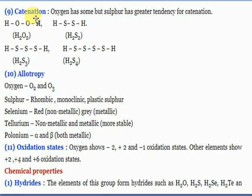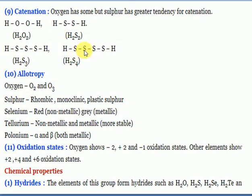Regarding catenation: oxygen has less catenation capacity, but sulfur has a higher tendency of forming catenation. Sulfur has atomicity of 8 (S₈), while oxygen has atomicity of 2 or 3. So when comparing melting and boiling points of oxygen and sulfur, sulfur has the higher melting point because it is octatomic S₈ while oxygen is O₂ gas.